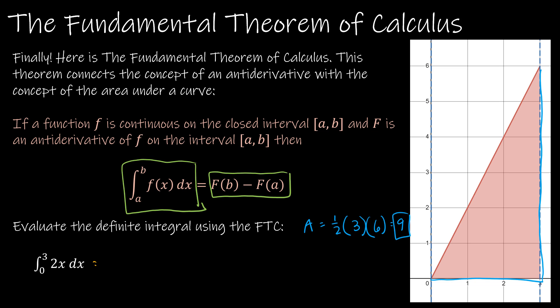Pay attention to the notation we're going to use. I'm integrating 2x with respect to x. Remember, this is just the power rule — we've got our 2, and x will turn into x squared over 2. Because this is a definite integral, I don't need to use plus c, but I'll put it for now so you understand why. I'm going to integrate from 0 to 3.